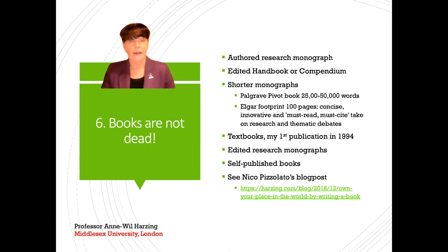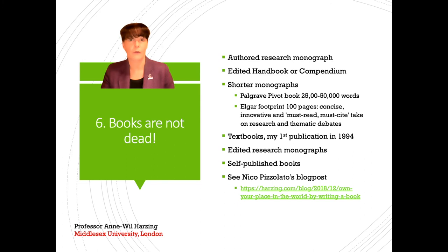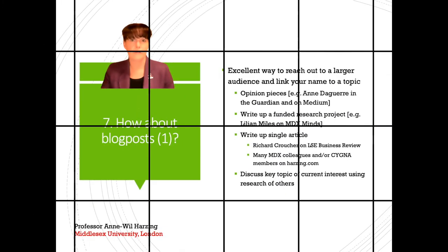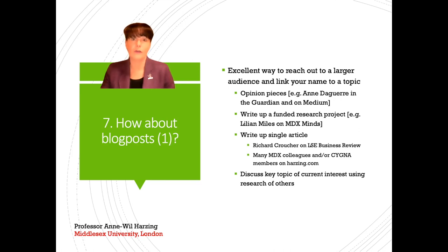If you really have something important to publish but can't find an interested publisher, you can also self-publish through an Amazon subsidiary — it's a really easy process. The options so far — journal articles in many different types of journals, and books whether research monographs, edited books, handbooks, or textbooks — basically communicate with either scholars or students.